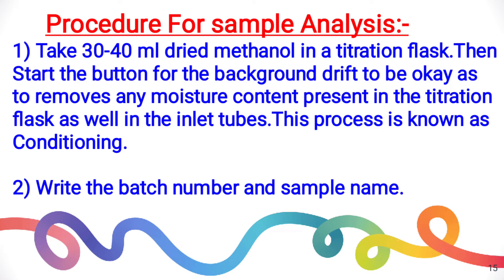If you want to analyze any sample, the operation of the Karl Fischer titrator software is shown here. The most important step before starting the titration is cleaning the titrating flask to avoid any side reactions. The titrating flask is washed with methanol 2 to 3 times. Then, take 30 to 40 ml of dried methanol in the titration flask and start the conditioning process, also known as background drift or conditioning. This process is very important as it removes the moisture content present inside the titration cell or in the tubings.